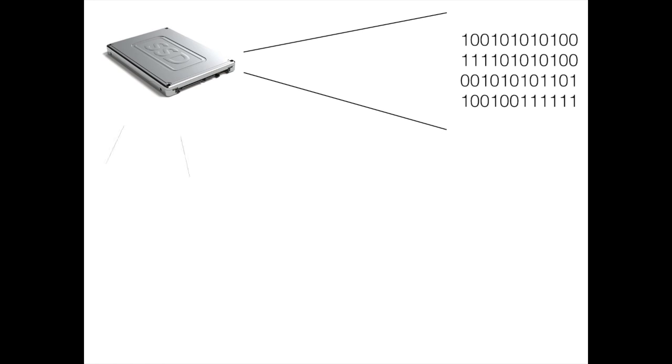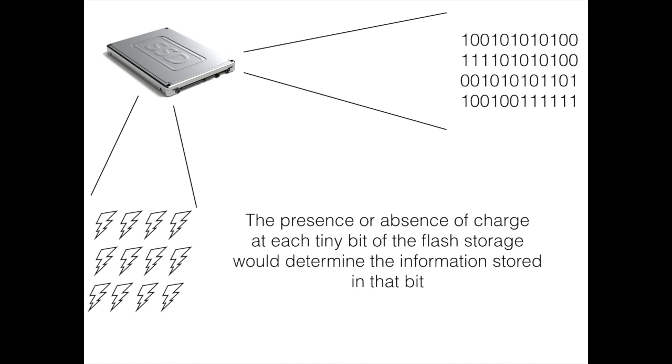Computers store data in binary form, that is using ones and zeros. The flash storage tool is composed of the same. These ones and zeros are stored in the form of charges, and the presence or absence of charges at each tiny bit of storage would determine the information stored there. That is, it either says zero or one.